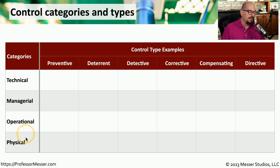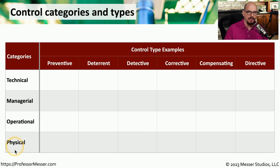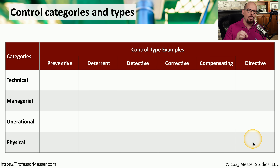In this video, we'll focus on these four categories of controls: the technical, managerial, operational, and physical. And we'll look at a number of different control types and determine where we would fit certain control types into certain categories.